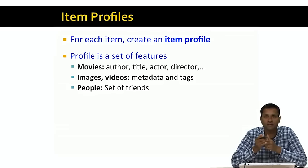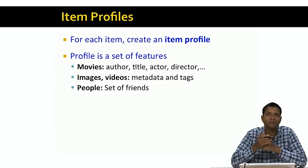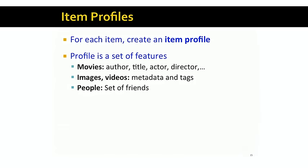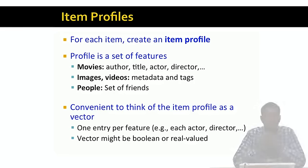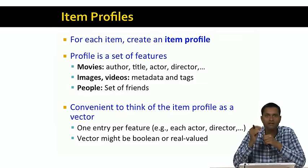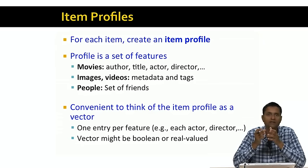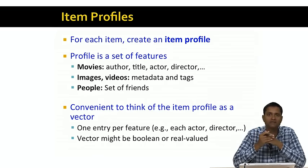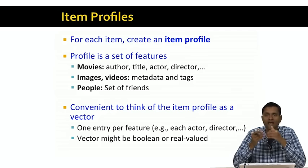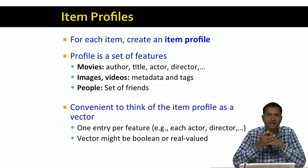In the case of images and videos, we might use metadata and tags. In the case of people, the item profile might be a set of friends of the user. Even though the item profile is a set of features, it's often convenient to think of it as a vector. The vector could be either Boolean or real-valued, and there's one entry per feature. For example, in the case of movies, the item profile might be a Boolean vector with a zero or one for each actor, director, and so on, depending on whether that actor or director actually participated in that movie.